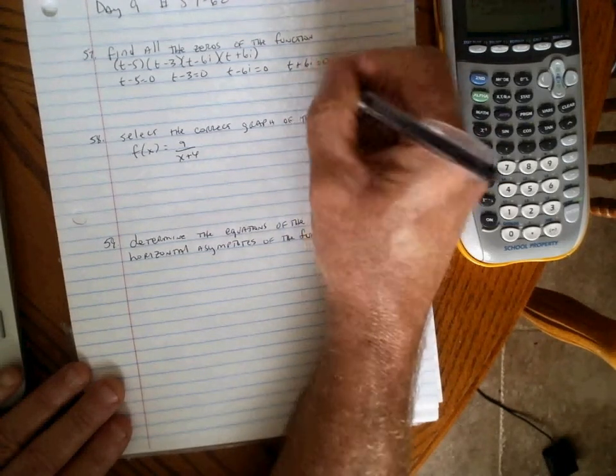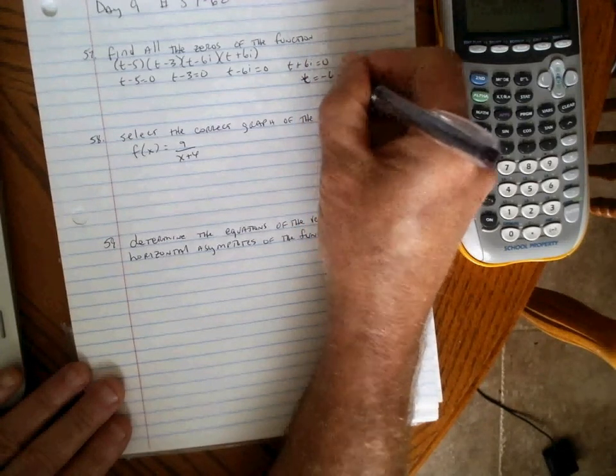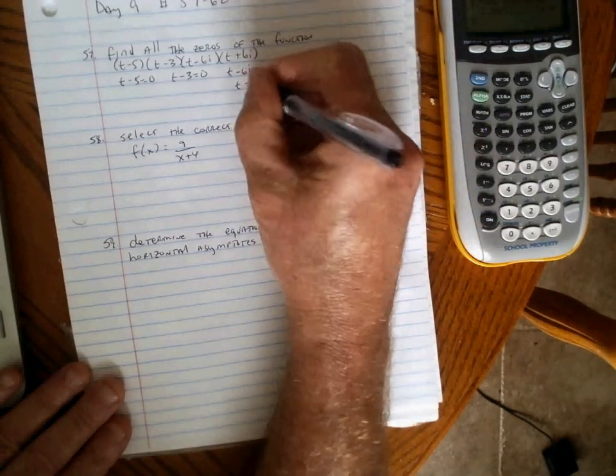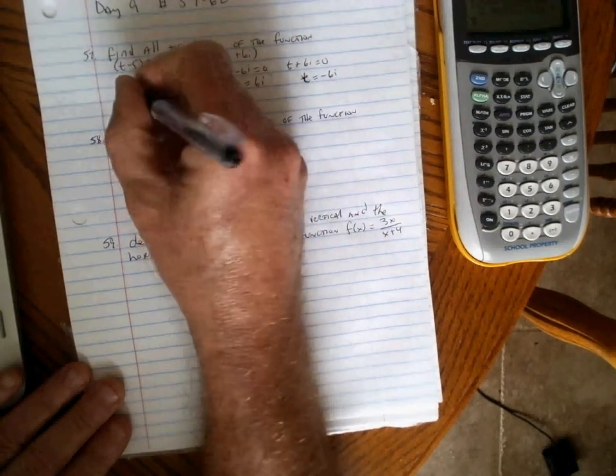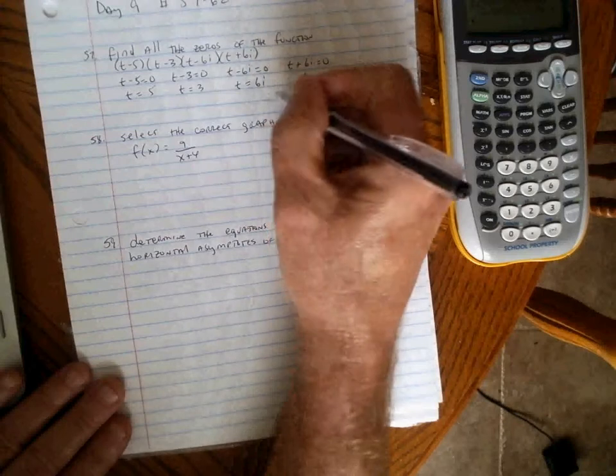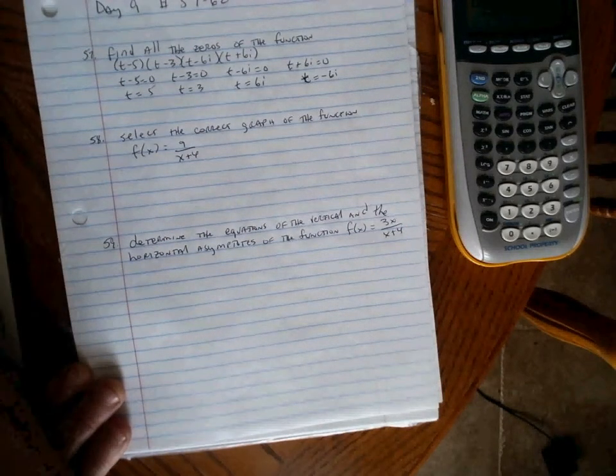Subtract 6i from both sides. Add 6i to both sides. Add 3 to both sides. Add 5 to both sides. We see t equals 5, t equals 3, and t equals plus or minus 6i.